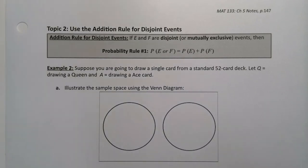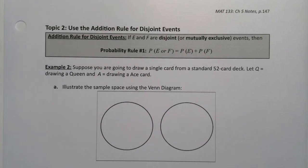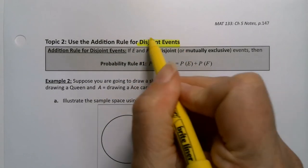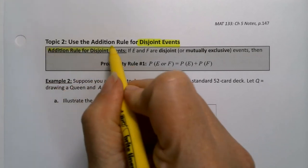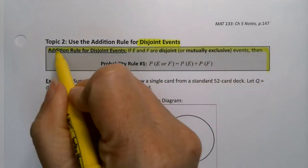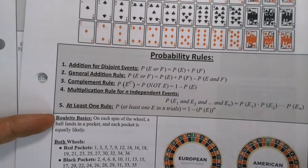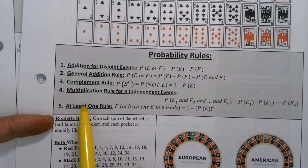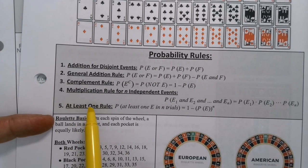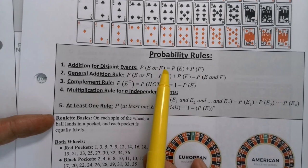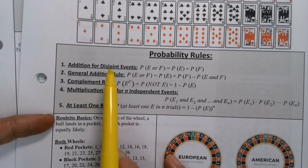Now that we understand the definition of disjoint, it's time for us to put it into practice for our first probability rule. Probability rule number one is the addition rule for disjoint events. Now the probability rules are listed out for you on your exam notes packet. So if you look at your exam notes packet, there they are, the five probability rules that we're going to use and focus on. We're looking right now at probability rule number one, and you'll notice it has the word disjoint right in there.